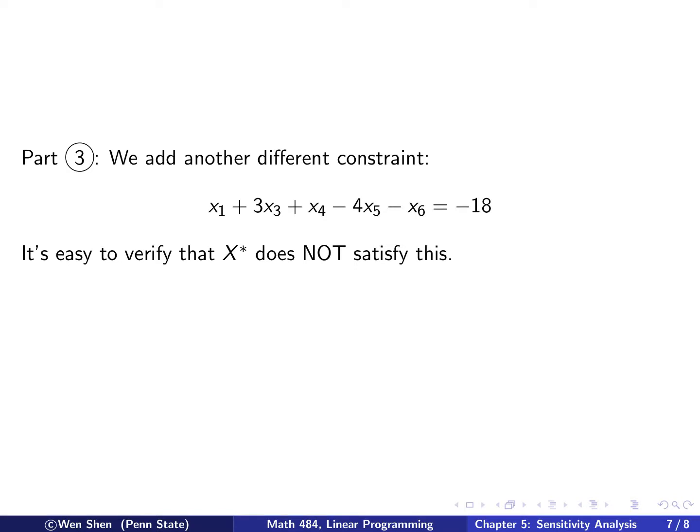So, part 3 of the example. Now we add another different constraint, which is just an equal sign. So we just try all different types. And it's also easy to verify that the original optimal solution does not satisfy this. That's very easy to verify.